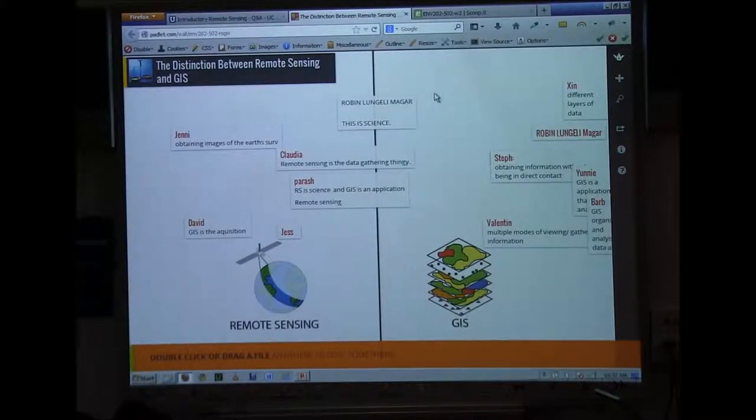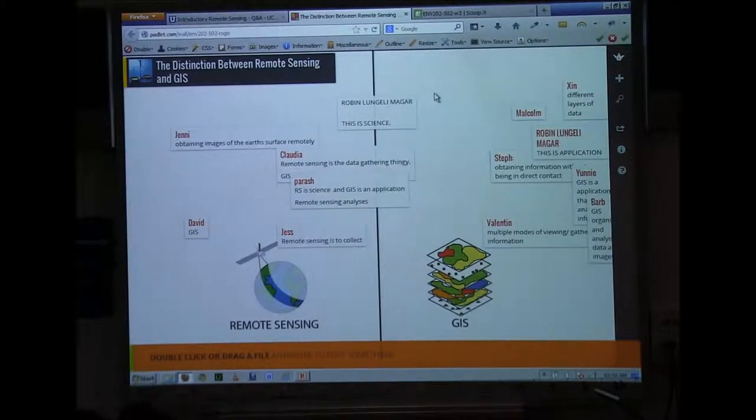Students have asked me to clarify the distinction between remote sensing and GIS or geographic information systems. Firstly, I've asked them to post what they know about remote sensing and what they know about GIS. Here I'd like to break the terms down.